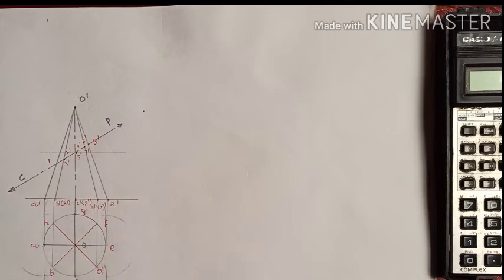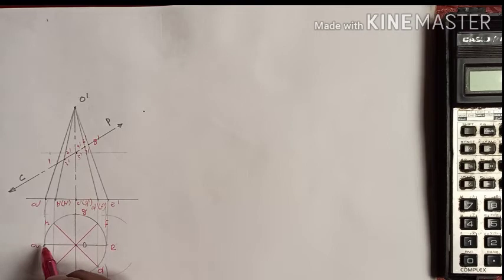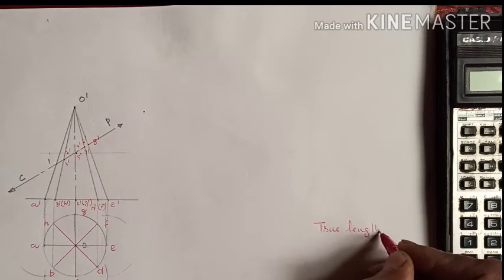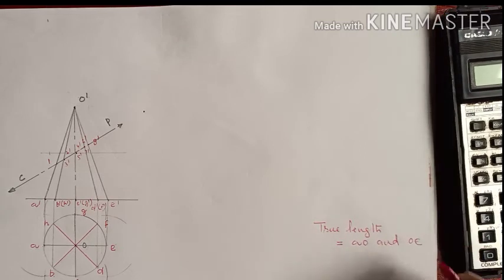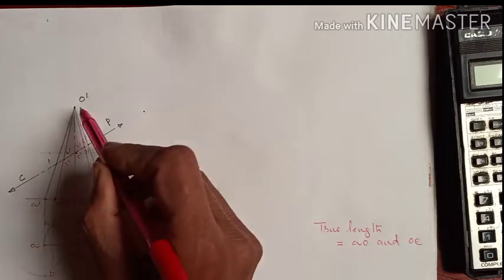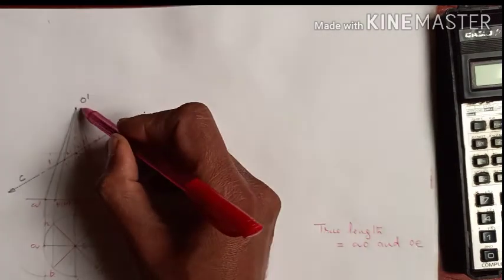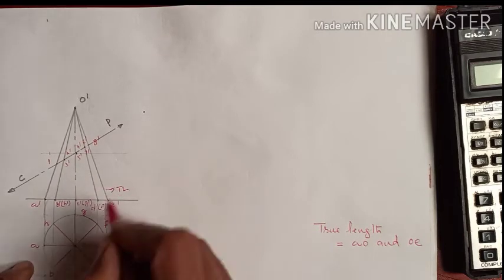Out of eight generators, only two are true generators — those exactly parallel to the XY line. These are generators A-O and E-O. In the front view, these correspond to O'-A' and O'-E'. These two generators give us true lengths, and we'll use them as the basis for our development.